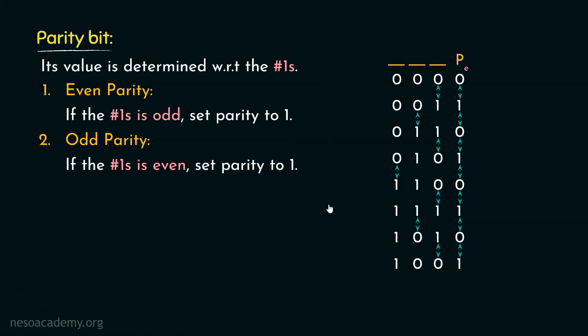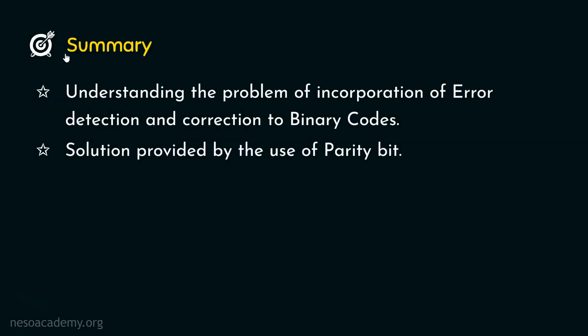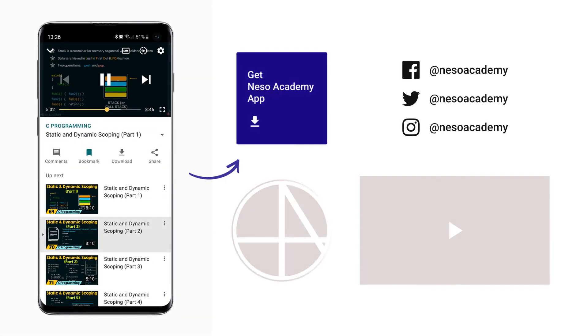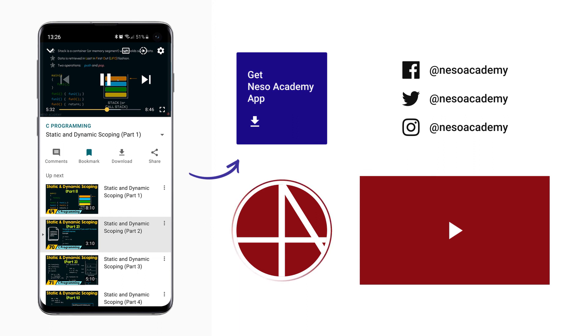As a homework problem, try out the incorporation of grey code and odd parity. In this session, we first acquired the understanding of the problem of incorporating error detection and correction to binary codes, and then observed the solution provided by the use of parity bit alongside the unit distance grey code. In the next session, we will observe the Hamming code for 1-bit error correction. Thank you all for watching.